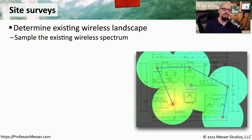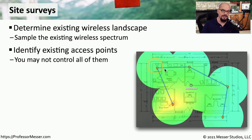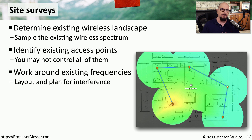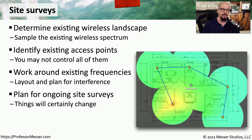Before installing a wireless network, it's useful to know the environment you're installing this equipment in. It's common to perform a site survey to get more information about the wireless infrastructure that may already be in place. There may be existing access points in the same building, or access points nearby that aren't in your control. This means we may need to work around frequencies already in use, or place our access point to minimize interference. These things tend to change over time, so you may want to perform additional site surveys later to make sure your wireless network is performing optimally.